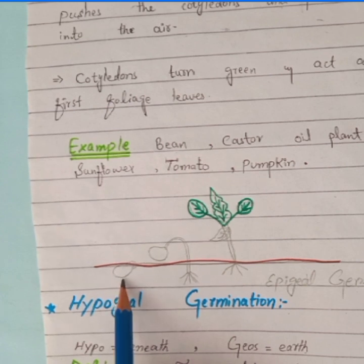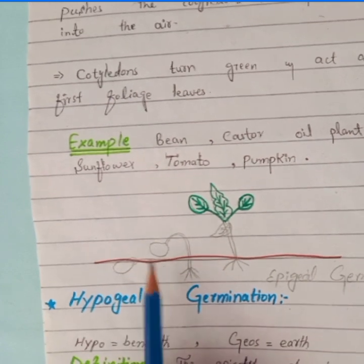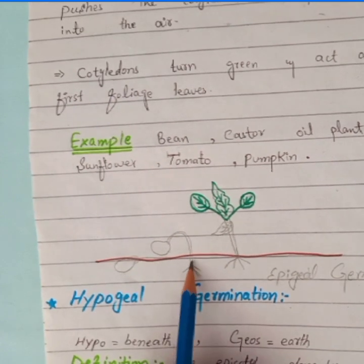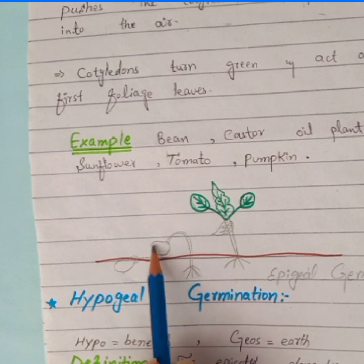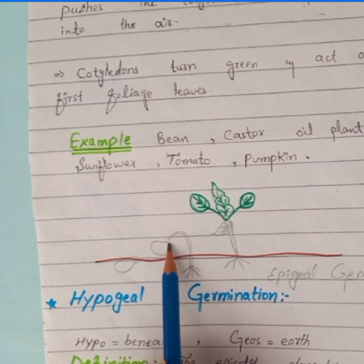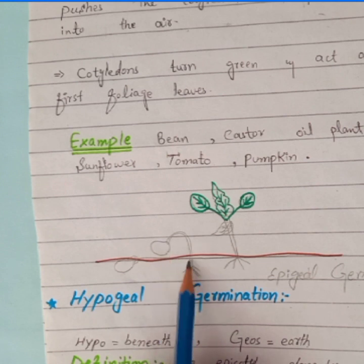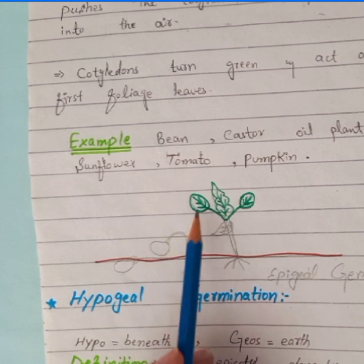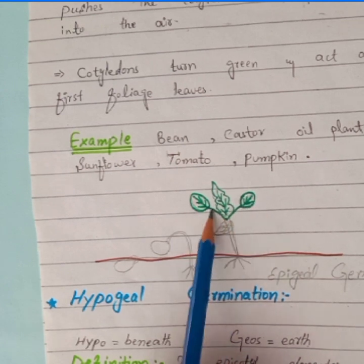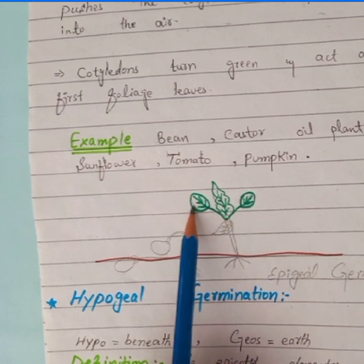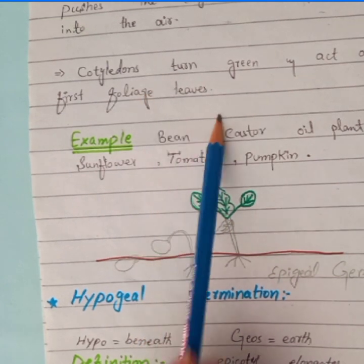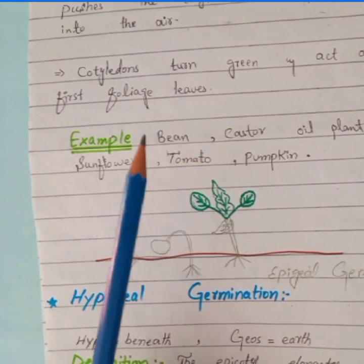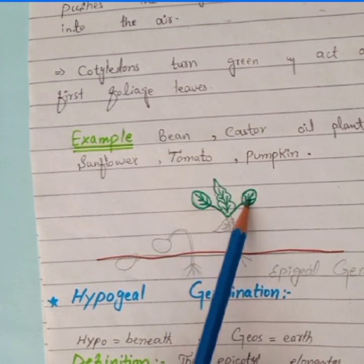When the seed starts germination, the hypocotyl will grow and elongate and push the cotyledons into the air. The cotyledons are shown as green in the diagram because, as discussed, they turn green and act as the first foliage leaves.